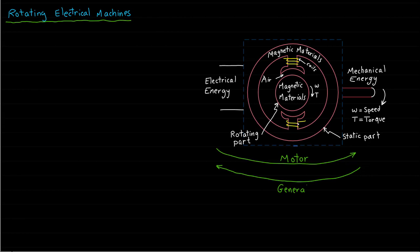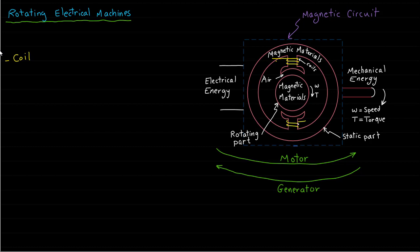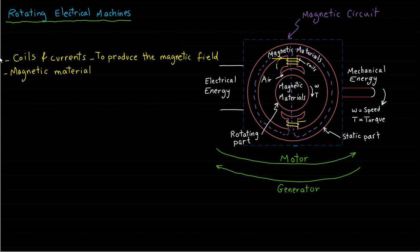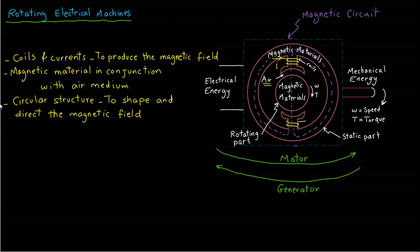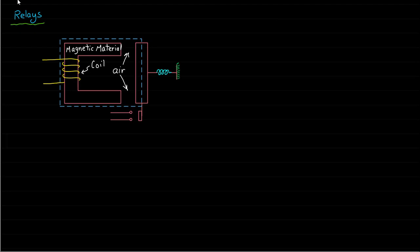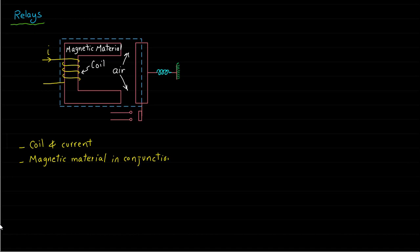As we mentioned earlier, the machines are able to do this conversion because of the presence of the magnetic circuit, which is used to establish the magnetic field. The aspects to establish the magnetic circuit of the electrical machines are: coil and current to produce the magnetic field, magnetic material in conjunction with air medium, and circular structure to shape and direct the magnetic field. Now let's review the magnetic circuit of the relays. As you can see from the figure, the magnetic circuit of the relay is formed by coil and current to produce the magnetic field, magnetic material in conjunction with an air medium, and a C-structure of magnetic material to shape and direct the magnetic field.